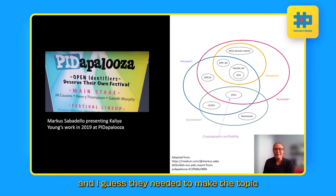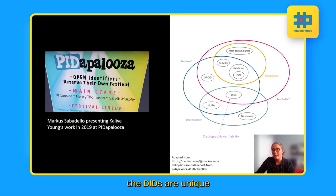And I guess they needed to make the topic that is admittedly a little dry, a bit more interesting. So this figure is from Marcus's presentation where he compared decentralized identifiers to all kinds of other identifiers that are currently being used. And I added in here that indeed the DIDs are unique for being the ones that are cryptographically verifiable.